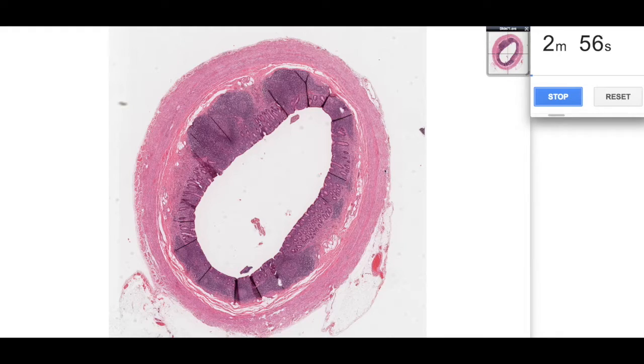So the appendix is one of the sites in the gastrointestinal tract that has a permanent aggregation of MALT. Now MALT is mucosa-associated lymphoid tissue, and you can see these very basophilic regions within this structure here. So this is the appendix cut in transverse section. Here's the lumen, and then we've got all of these very basophilic regions. These are the MALT, the mucosa-associated lymphoid tissue.